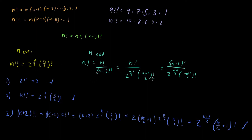Therefore the even formula is true, and the odd formula naturally follows. In the next video, I'm going to look at an application of the double factorial for deriving a closed form formula for half-integer values of the gamma function. That's going to be a really neat and important video, so I hope to see you there.